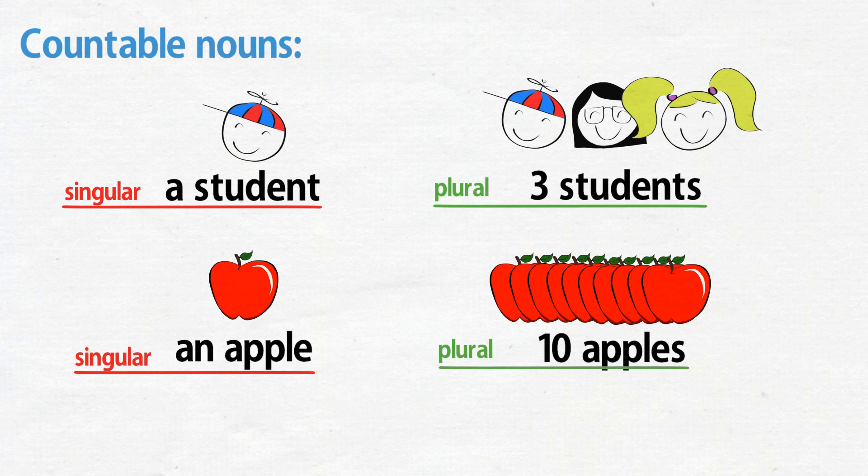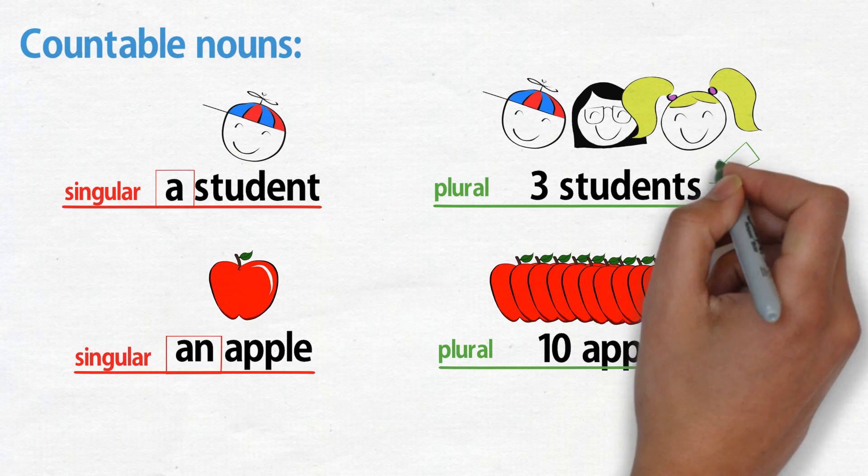Countable nouns have articles a and an in front of them in their singular form. They also have the ending s in their plural forms. These things are unique for countable nouns.